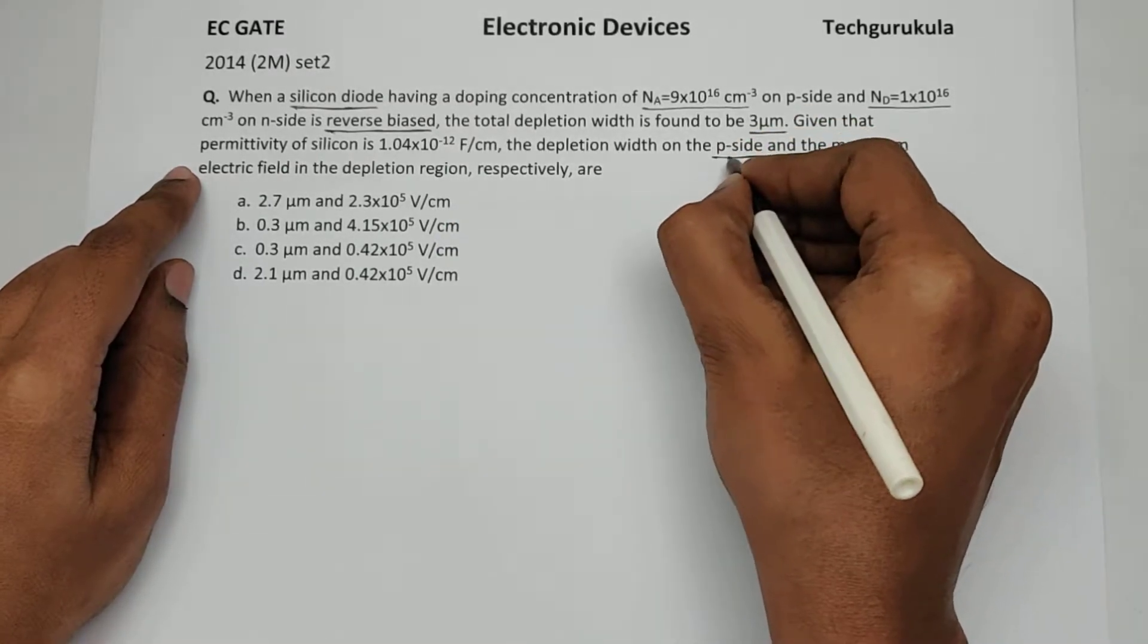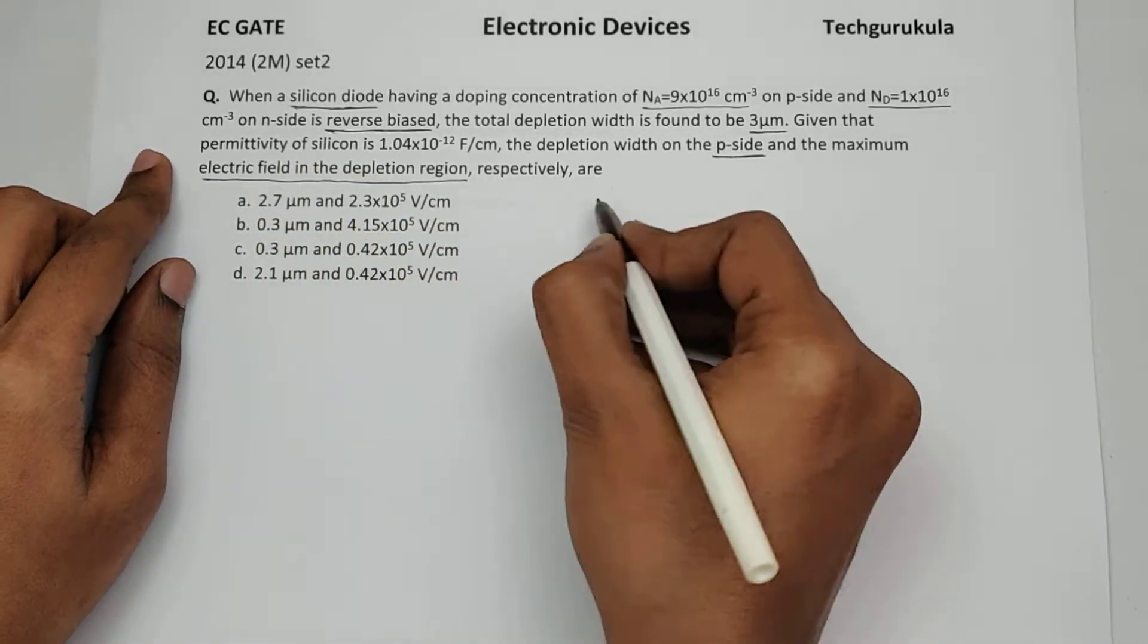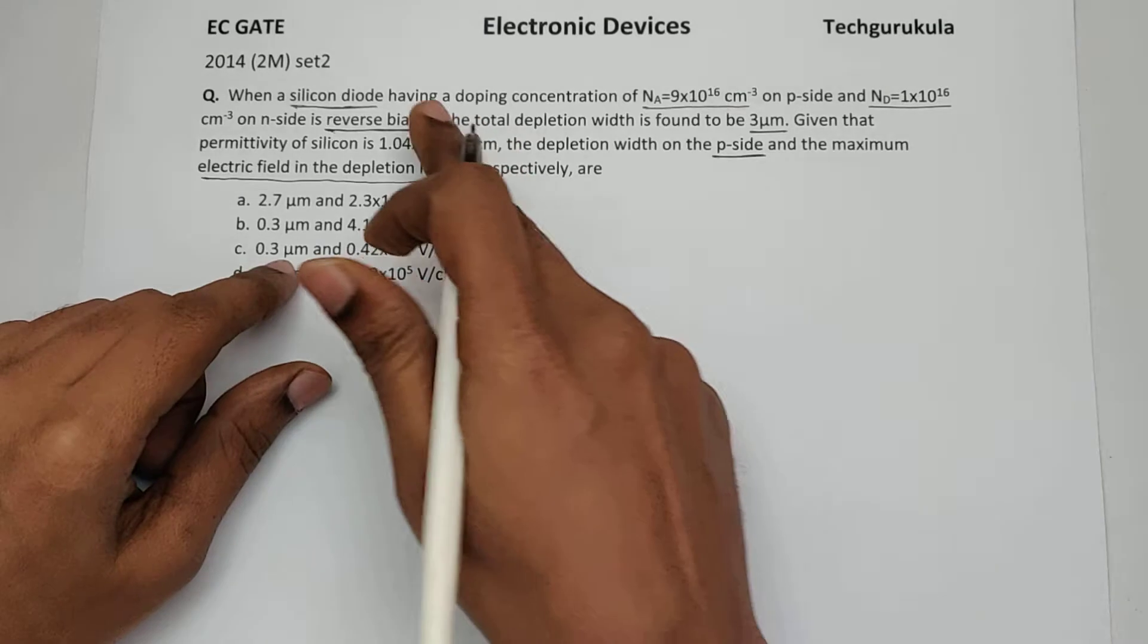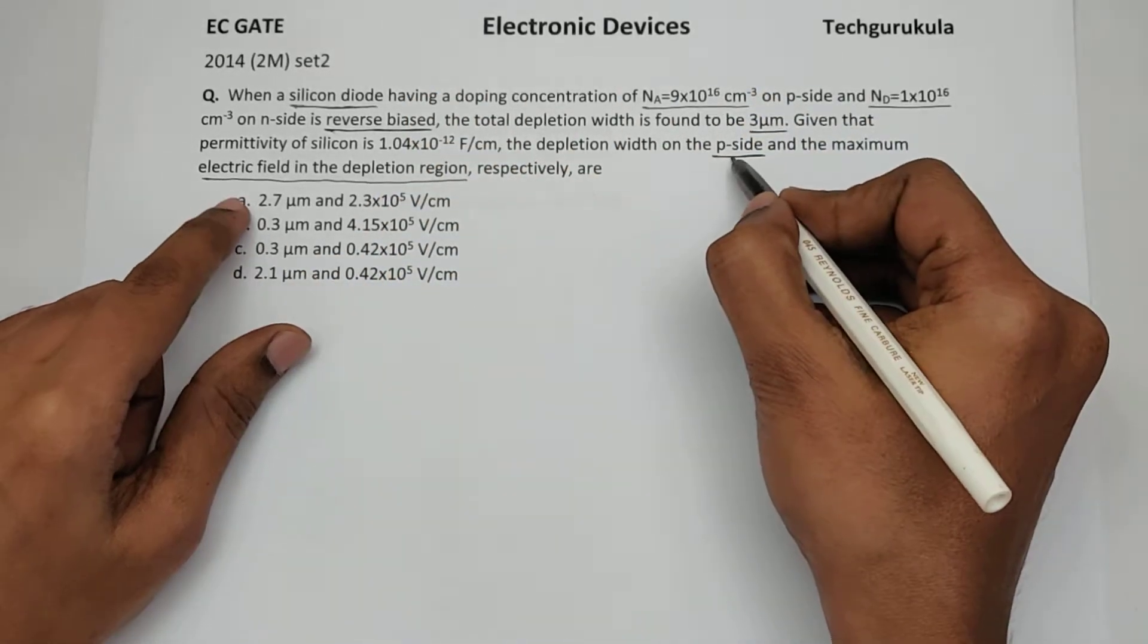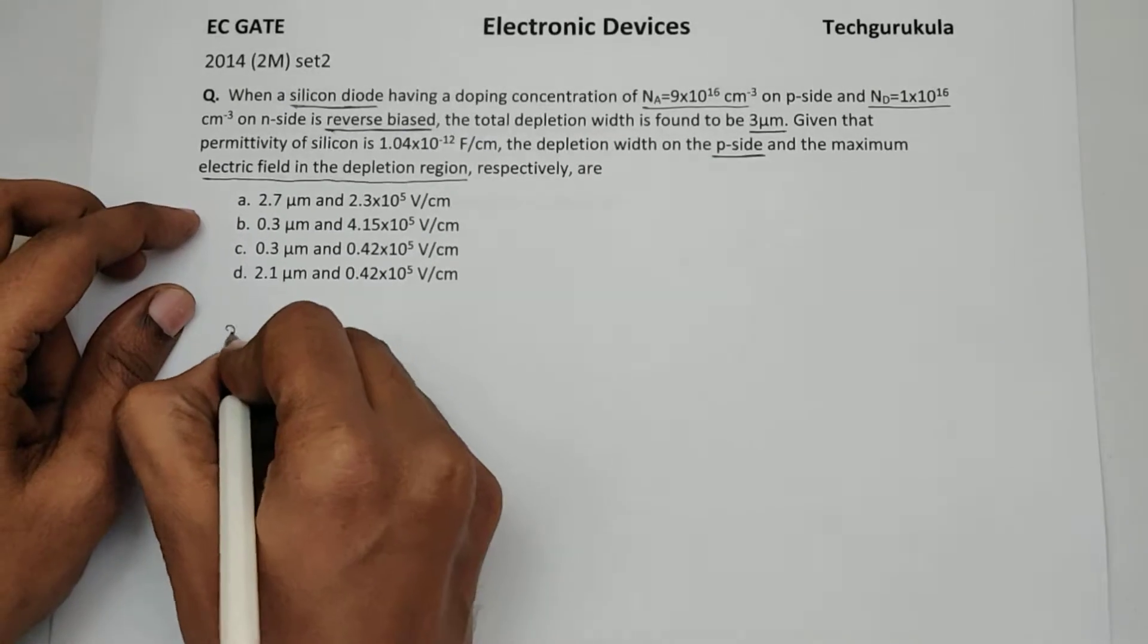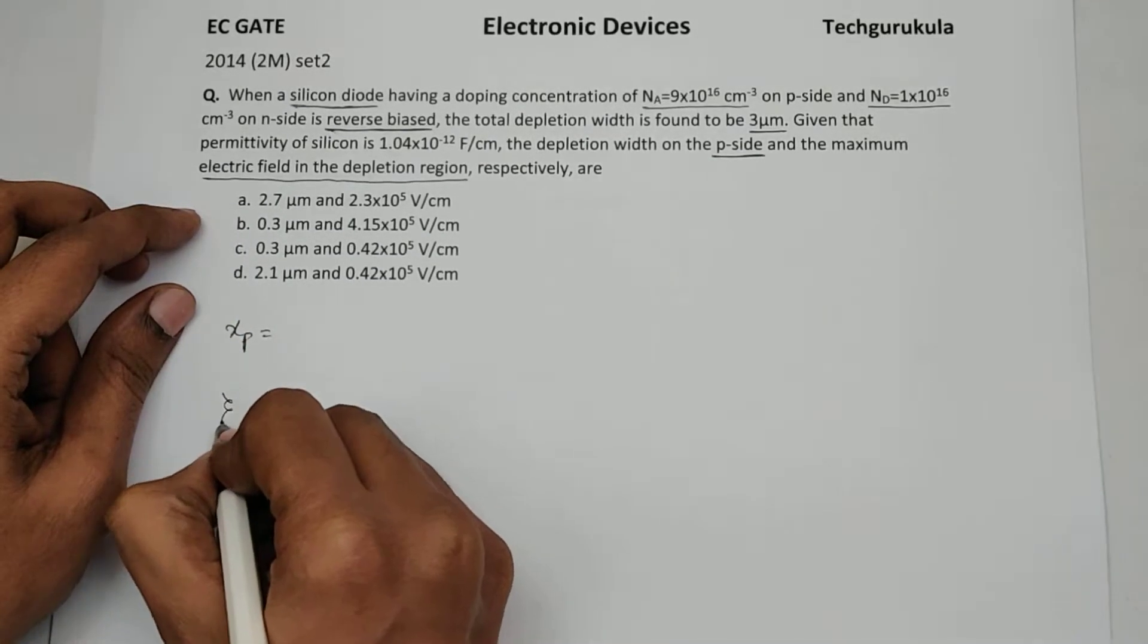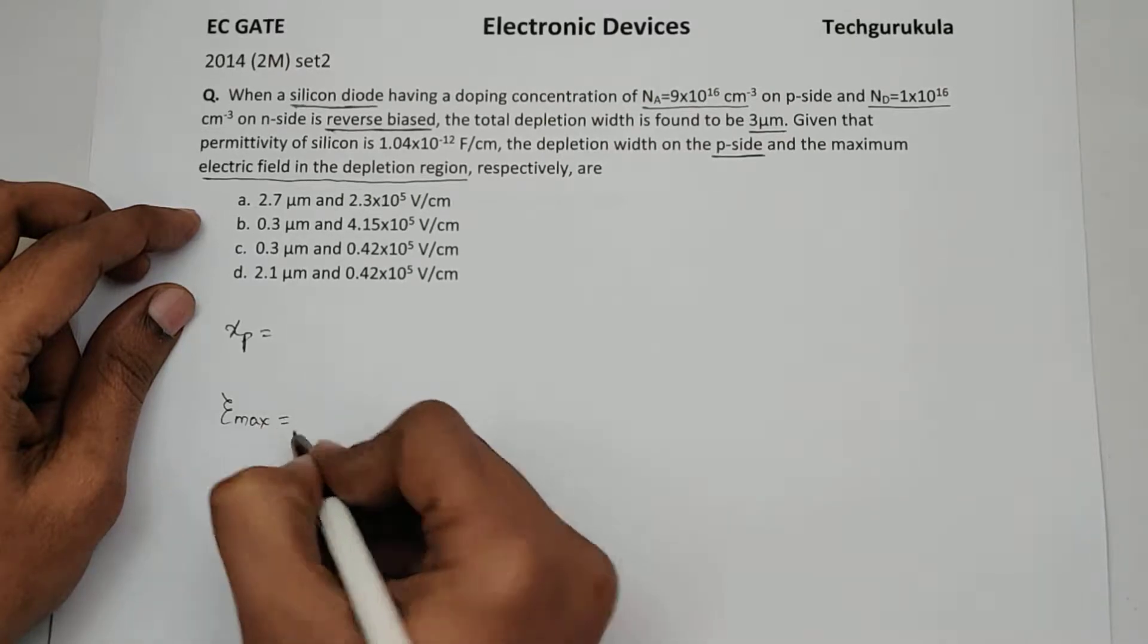the depletion width on the P side and the maximum electric field in the depletion region respectively are. This is the data given and we are supposed to be finding the depletion width on the P side and the electric field max.